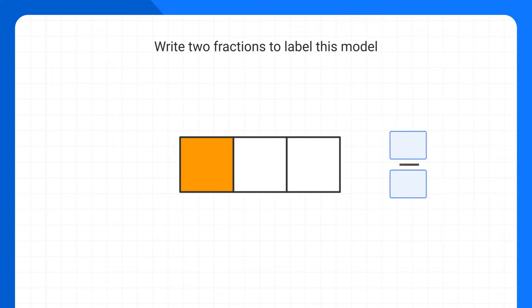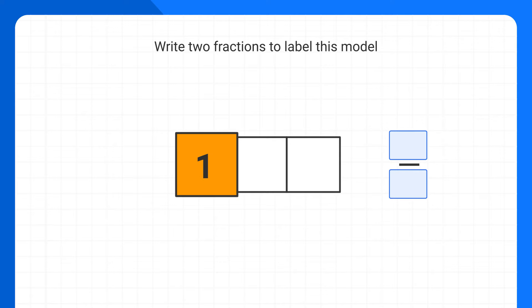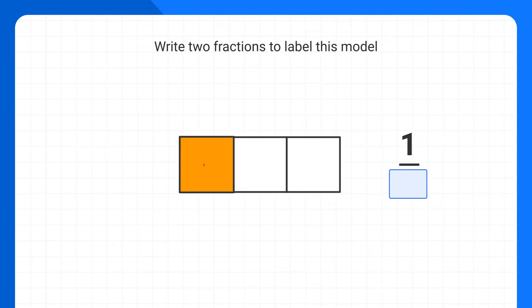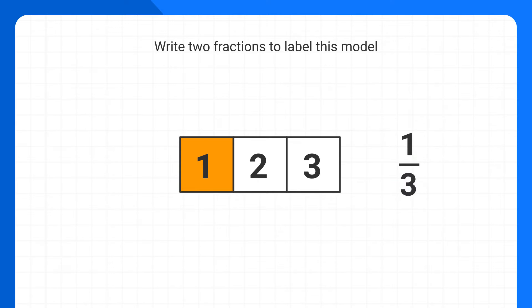Well, the first fraction we could write is just the one we see. In this model, there's one piece that's shaded, and there's a total of three pieces in the shape. So this is the fraction one-third.